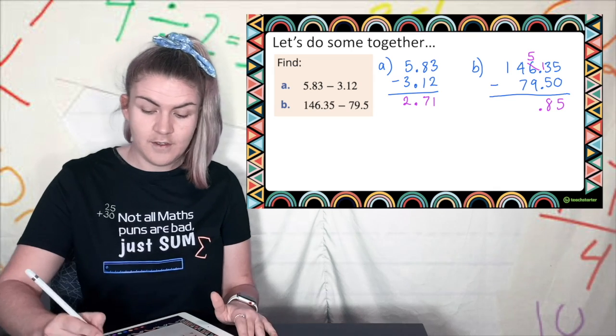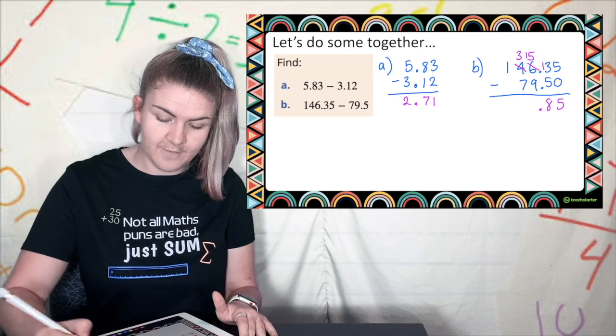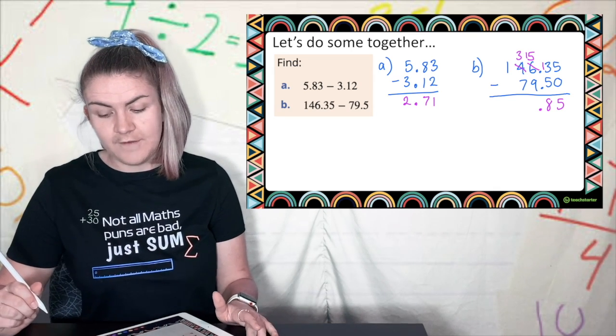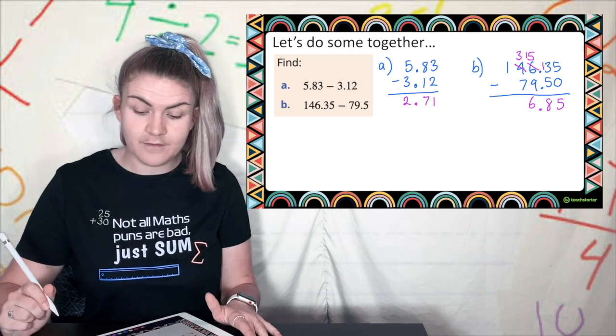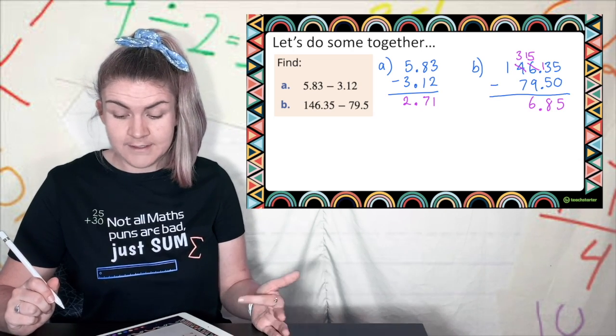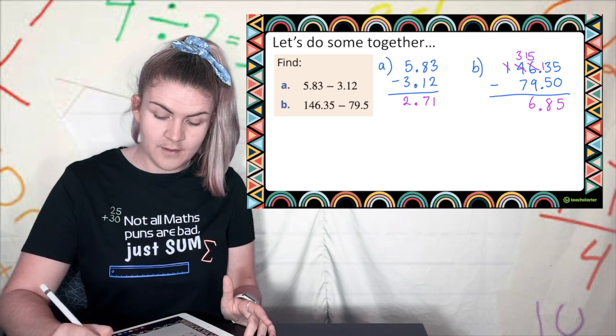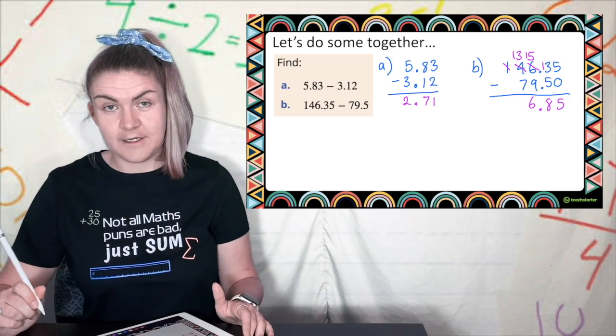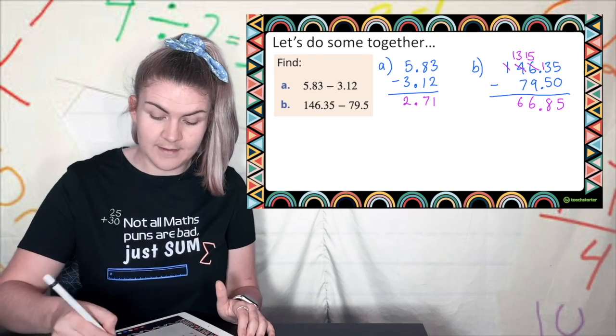5 take 9 can't do so 4 becomes a 3. 5 becomes a 15. 15 take away 9 is 6. 3 take away 7 can't do. Borrow 13 take away 7 is 6 and then there's nothing left there.